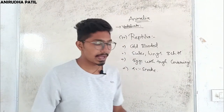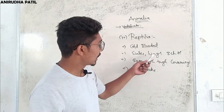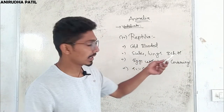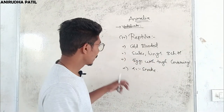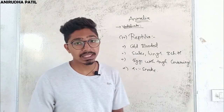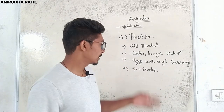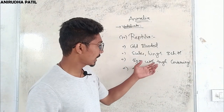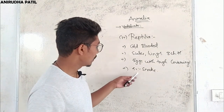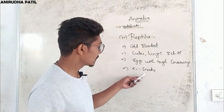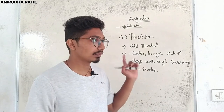The next group is Reptilia. They are also cold-blooded, with scales on their body. They respire through lungs, and the heart is three-chambered. They lay eggs but, unlike amphibians, they can lay eggs on land rather than needing water. An example is the snake.